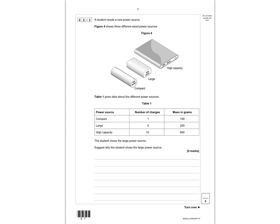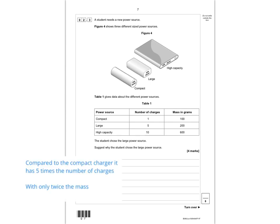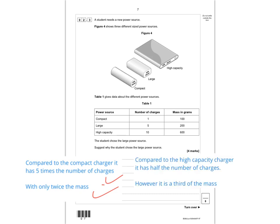Comparing to the compact source: the large has five times the number of charges but only twice the mass — one mark for each of those points. Comparing to the high capacity charger: the large has half the number of charges, which is a setback, however it is a third of the mass, so it's much lighter. Again, one mark for each of those points, giving you four marks total for this question.